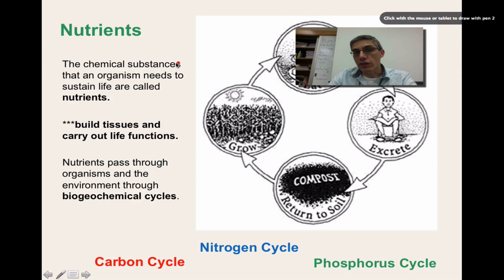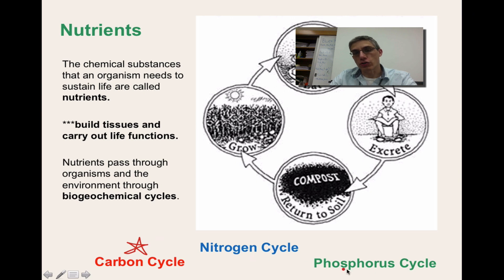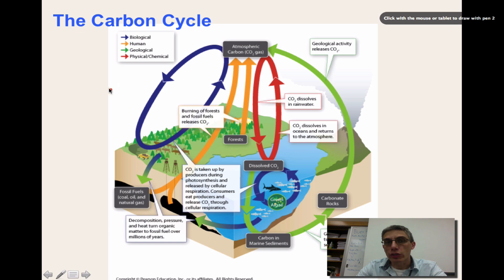Other types of cycles include the carbon cycle, the phosphorus cycle, and the nitrogen cycle — these are all considered nutrient cycles, meaning they have some part in building tissue in living organisms to carry out life functions. The only one we're going to talk about is the carbon cycle; we're not going to mention the nitrogen or phosphorus cycle in this class.